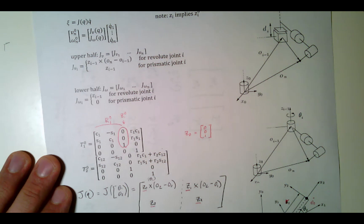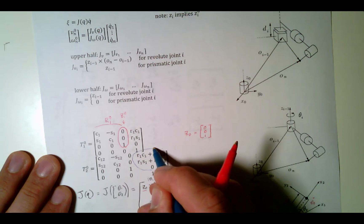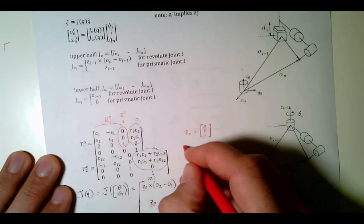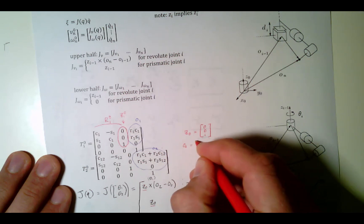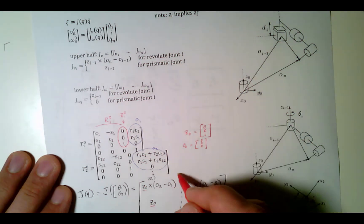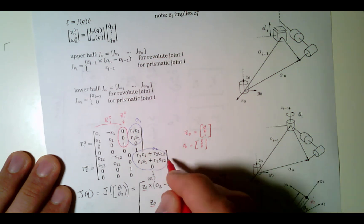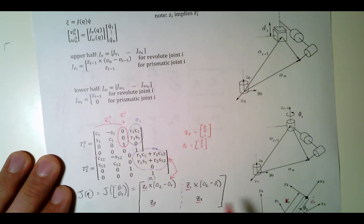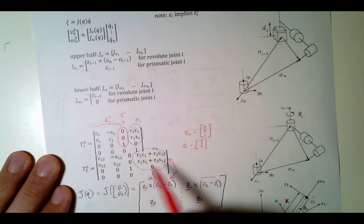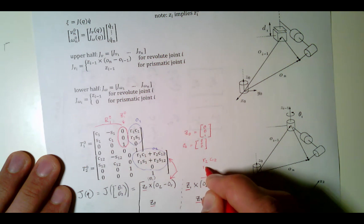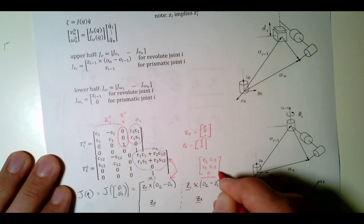The other things I need are: what is O2? I've got O2 right here, and O1 right here. O0 is going to be [0, 0, 0]. I also need to calculate what O2 minus O1 is — that's going to be R2*C12 and R2*S12. That's the difference. Now I've got all the components I need.